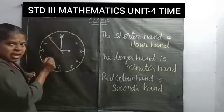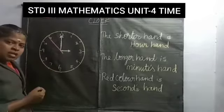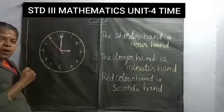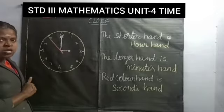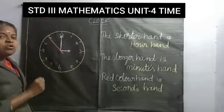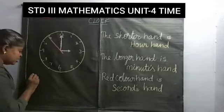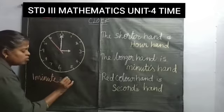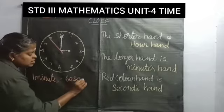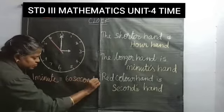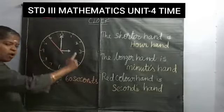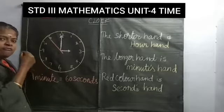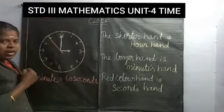The red color thin hand is called what? Second hand. The second hand is moving faster to complete 1 minute. So 1 minute is equal to 60 seconds. To complete 1 rotation it takes 1 minute. The second hand moves faster to complete 1 minute.